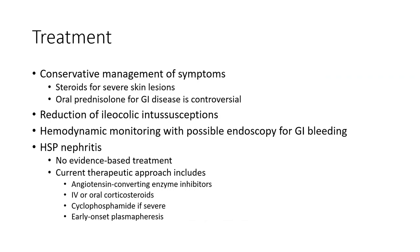Treatment includes conservative management of symptoms, steroids for severe skin involvement, and oral prednisolone for GI disease, though this is controversial. Reduction of ileocolic intussusception and hemodynamic monitoring with possible endoscopy for GI bleeding are recommended. For HSP nephritis, no evidence-based treatment is established; the current therapeutic approach includes angiotensin-converting enzyme inhibitors, IV or oral corticosteroids, cyclophosphamide, azathioprine, and early onset plasmapheresis.